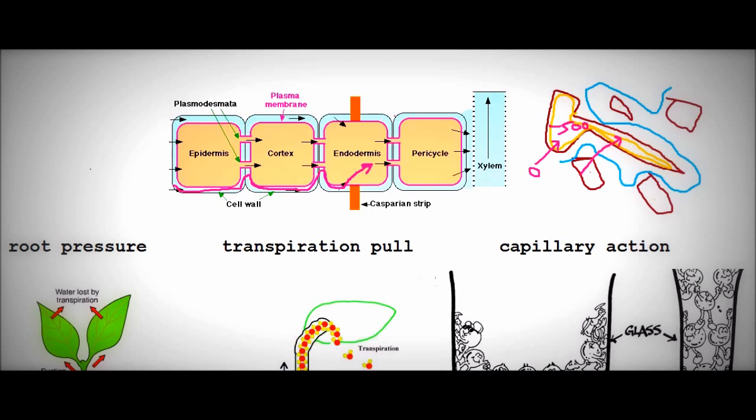It ensures that water and dissolved nitrate ions have to pass into the cell cytoplasm through the cell membranes. Nitrate can be actively transported from the cytoplasm of the cortex cells into the xylem and this lowers the water potential in the xylem so water from the cortex cells follows into the xylem via osmosis.